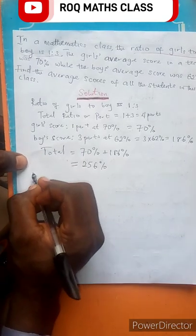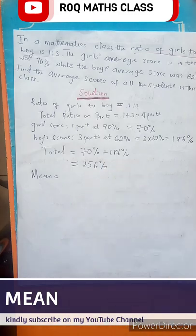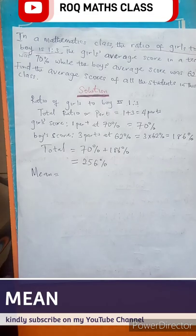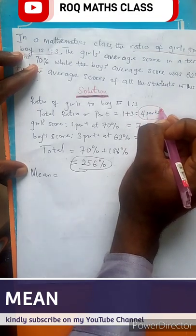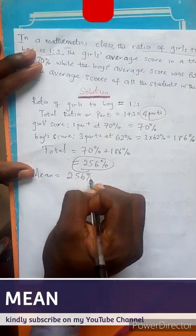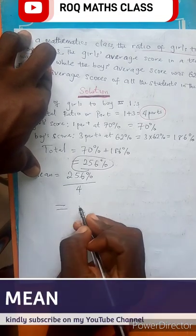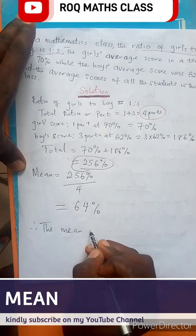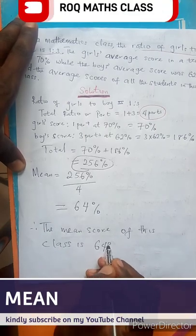Then the next thing is mean. So the mean is the sum of the items over the number of the items. This is the sum of our items. This is the total item. How many items do we have? 4. So what is the sum of the items? 256% over 4. So this is the same thing as 256 divided by 4, which equals 64%. Therefore, the mean score of this class is 64%.